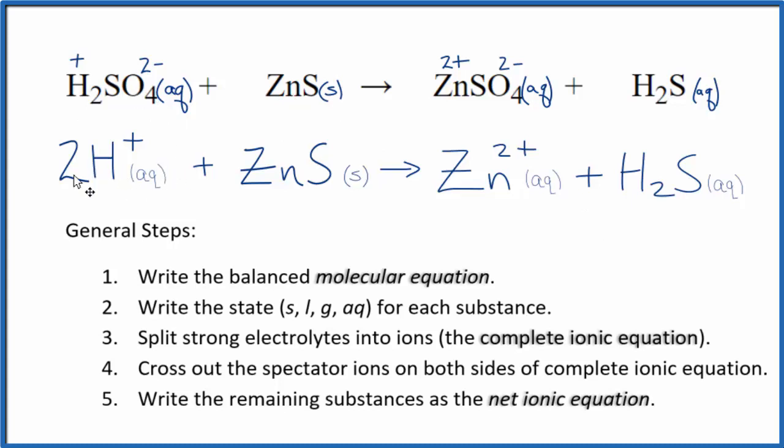You'll note, charge is conserved. We have 2 times 1 plus, that's 2 plus. And then over here on this side, we have a 2 plus. So charge is the same and if you count the atoms up, they'll be balanced as well. This is Dr. B with the balanced net ionic equation for H2SO4 plus ZnS. Thanks for watching.